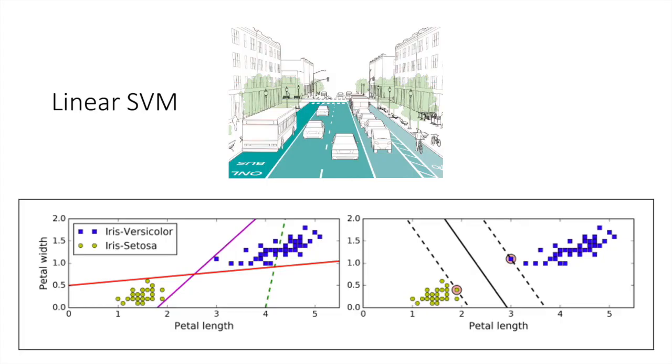The fundamental idea behind support vector machines is best explained with some pictures. As you can see here in the picture below, the two classes can clearly be separated with straight lines. This is why we say that they are linearly separable. The left plot shows the decision boundaries of three possible linear classifiers.